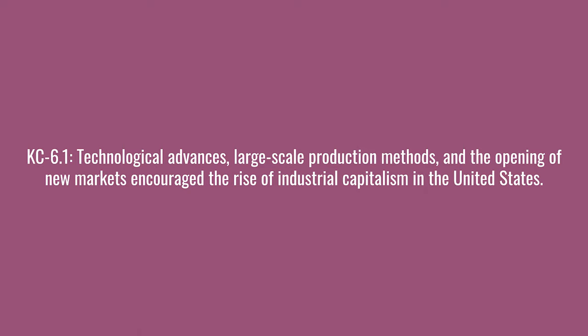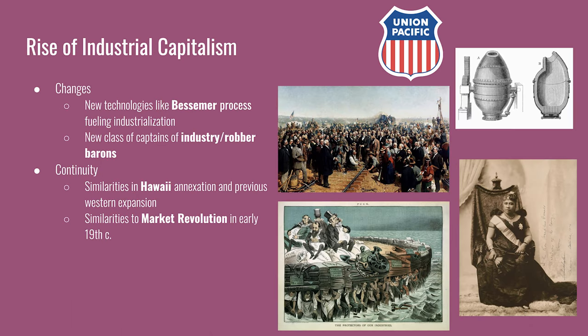The first key concept: technological advances, large-scale production methods, and the opening of new markets encouraged the rise of industrial capitalism in the United States. Changes include new technologies like the Bessemer process for manufacturing steel, which fuels industrialization and new heavy industries. The wealthiest new industries create a new class of captains of industry and robber barons. The form of capitalism the United States adopts is reliant on railroads for transportation and wage labor for manufacturing. Continuities include how attempts at annexing Hawaii were similar to previous Western expansion efforts to gain access to new raw materials and new consumers, and that industrialization had already started in the early 19th century during the market revolution.